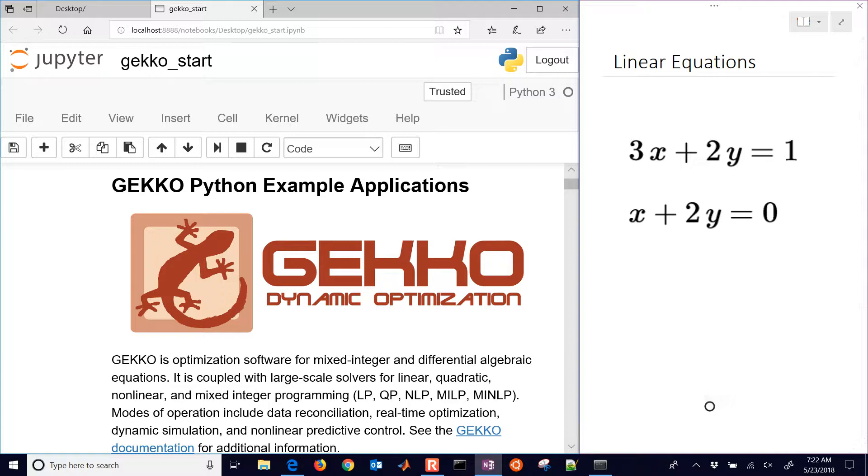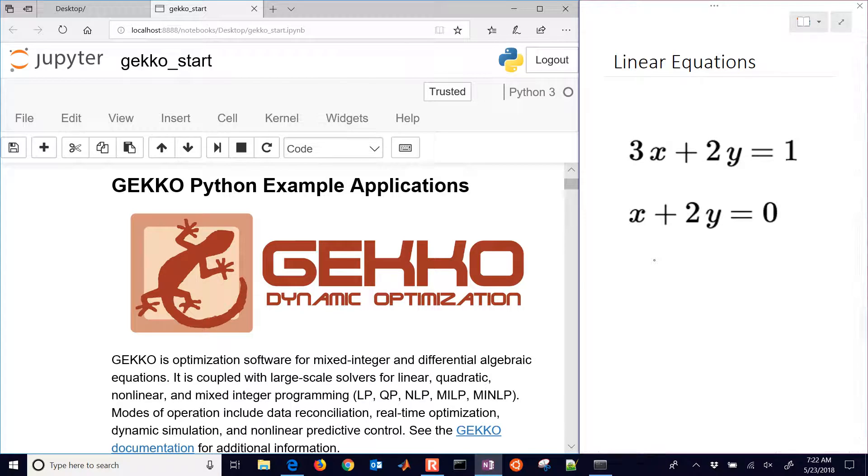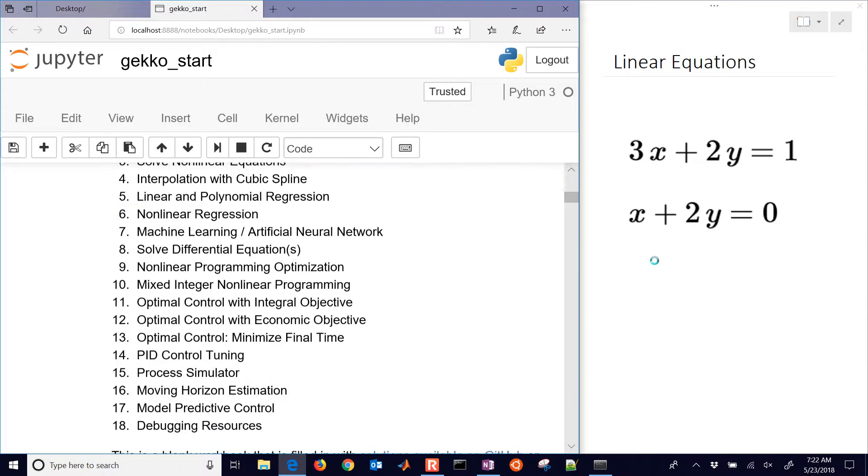We're going to solve a set of linear equations with Python, and we have two equations as an example problem here. You could rearrange these, for example, and say x equals negative 2y, plug that in right here, and then solve for y, and then solve back again for x. That would be one way, but for simple systems this is effective, but for very large-scale systems this is not going to be very effective to seek a solution by hand.